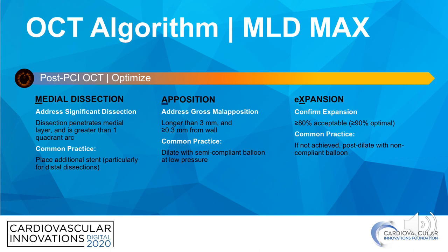Lastly is expansion, which is the most important metric as stent expansion has the best correlation with future stent-related outcomes. We consider acceptable at least 80% compared to the respective reference segment, with greater than 90% stent expansion being considered optimal. If you have not achieved at least 80% stent expansion, you want to post-dilate with non-compliant balloons.